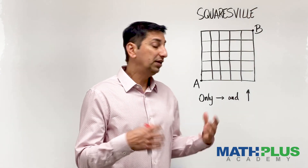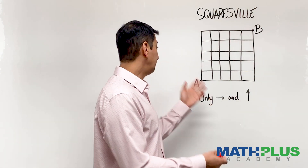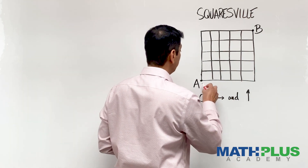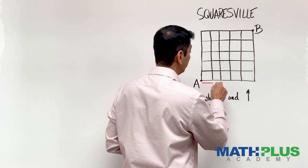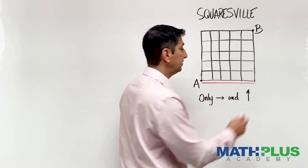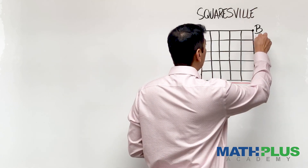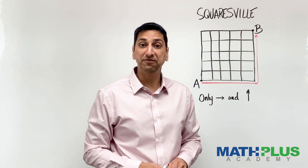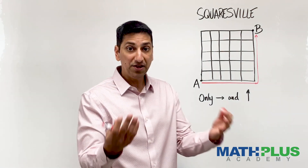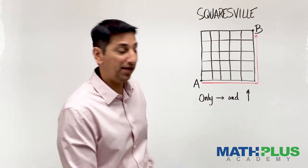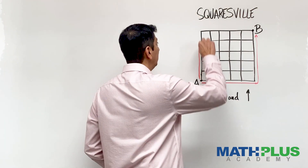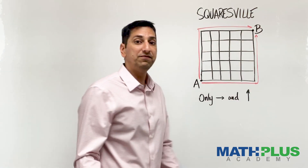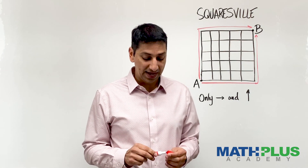Let me give you an example. If I start at A and I want to get to B, I might choose to go right along this road all the way to the end, and then up all the way to B. Simple — that is one way to get from A to B. Another way is to take the other edge of town: up over here, right over there, and you get to Point B just like that.